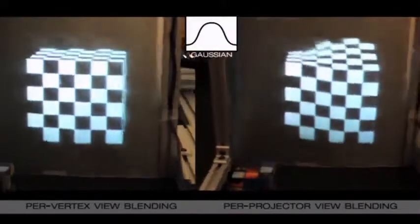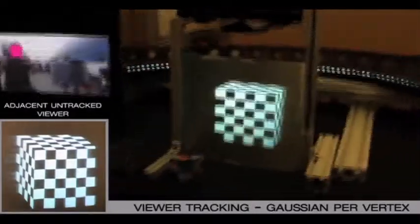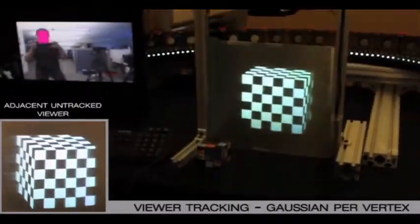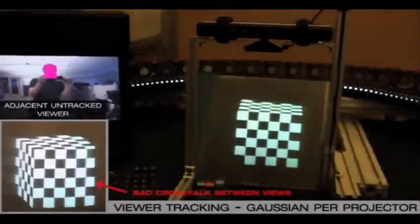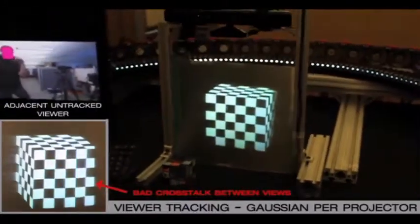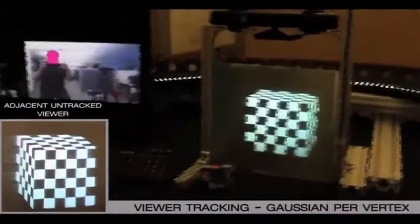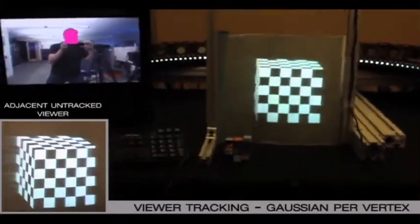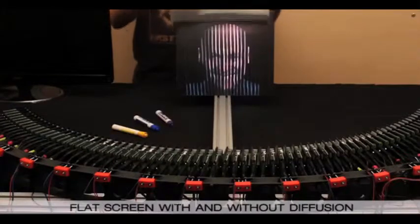Using per vertex view blending also reduces crosstalk. So in this case, we have an untracked viewer here that's staying stationary, and we have this actively moving tracked viewer. And as he moves close to this untracked viewer, ideally this view remains fixed. Now if you use per vertex, or a constant height across each projector frame, there's going to be significant crosstalk whenever this tracked viewer moves close to this untracked viewer.